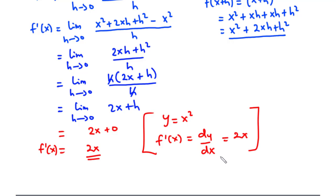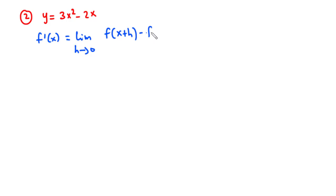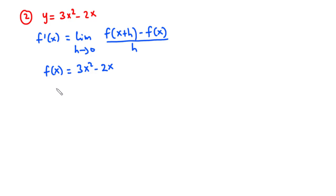Let's solve the next question. For this question we have y equals 3x squared minus 2x, and we are going to find its first derivative. We know f prime of x equals the limit as h approaches zero of f of x plus h minus f of x divided by h. So f of x equals 3x squared minus 2x, and f of x plus h equals 3 times x plus h squared minus 2 times x plus h.